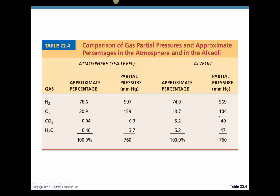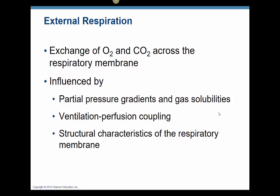In the alveoli, we see a PO2 of 104 and a PCO2 of 40. This is the highest place in the body that we're going to find oxygen levels of 104 mmHg, because the oxygen has just come in from outside air and has not been used by the tissues. Oxygen is going to leave the alveoli and enter the blood, and carbon dioxide is going to leave the blood and enter the alveoli to be exhaled. What influences that crossing of the respiratory membrane is the pressure gradient — gas moves from high to low pressure.